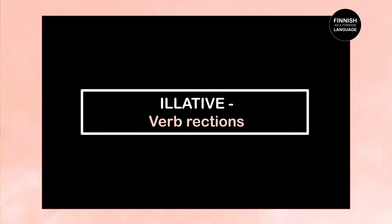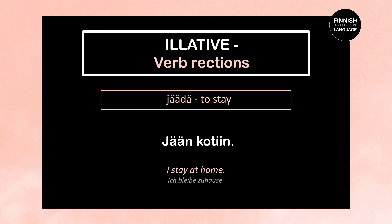Now the illative with verb constructions. First: jäädä, meaning to stay. Jään kotiin — I stay at home. Jään is the first person present tense of jäädä. Kotiin is the illative here. In Finnish you think 'where to do I stay' — I stay to home — which is why we say jään kotiin.